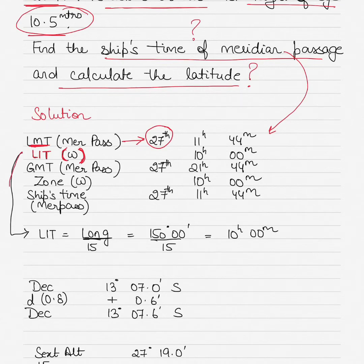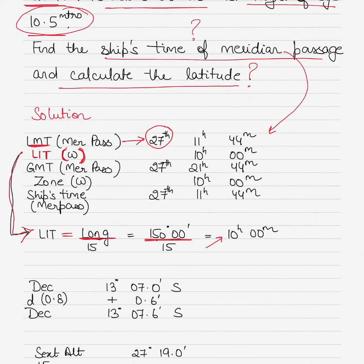To calculate longitude in time, divide the longitude by 15. The longitude here is 150° West: 150 ÷ 15 = exactly 10 hours. The mnemonic is 'LIT west, GMT best' — if you have west longitude, add LIT to LMT to get GMT, which should be greater than LMT. 'LIT east, GMT least' means for east longitude you subtract. Adding 10 hours to 11:44 gives 21 hours 44 minutes, still on the 27th of October — that's your GMT meridian passage.